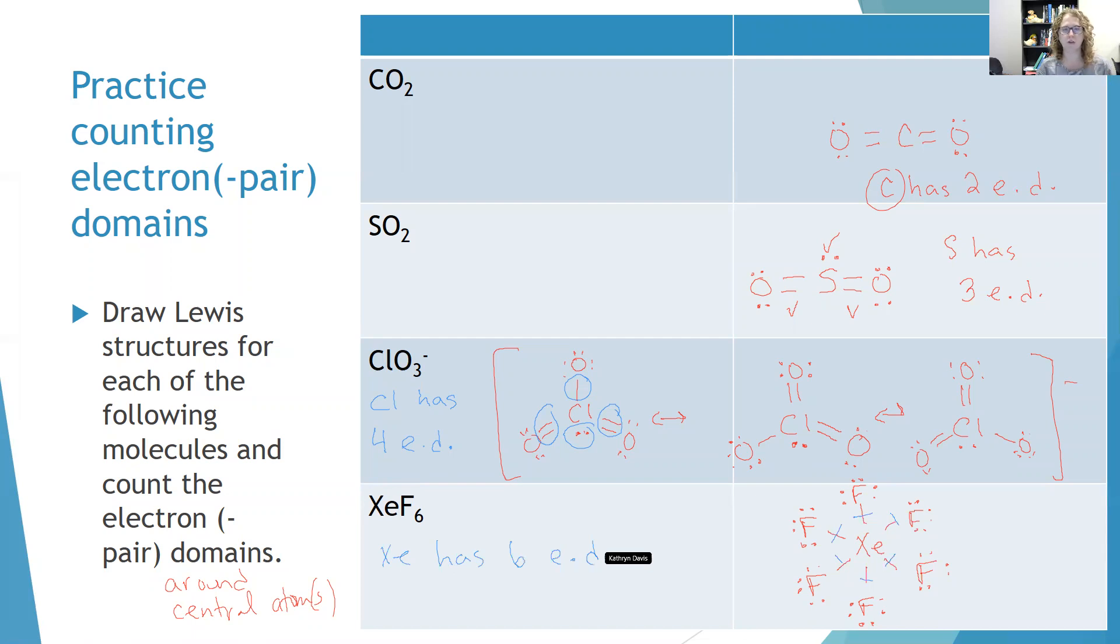If you can draw a Lewis structure, you can count electron domains. It's a very simple process. In another video, we're going to follow on to this and turn this into specific shapes and how those will look in 3D.